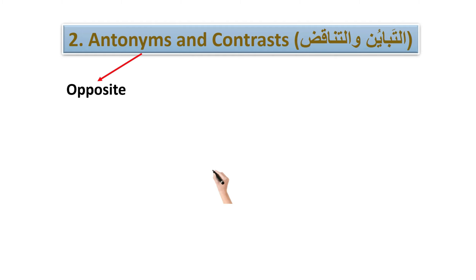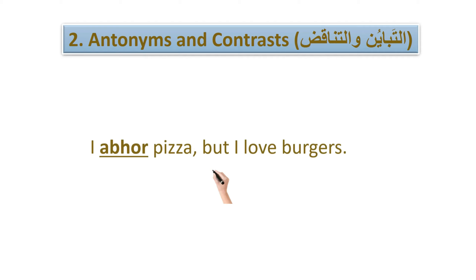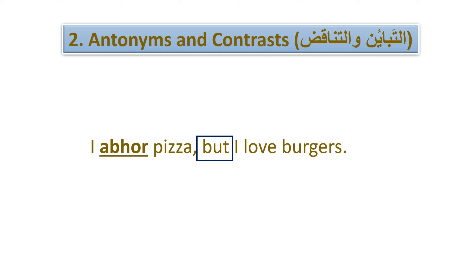The second way is by looking at antonyms, or contrasts. An antonym is the opposite of the word. For example: 'I abhor pizza, but I love burgers.' We look for the meaning of 'abhor' by finding its antonym. The word 'but' signals a contrast and helps us find the opposite meaning.